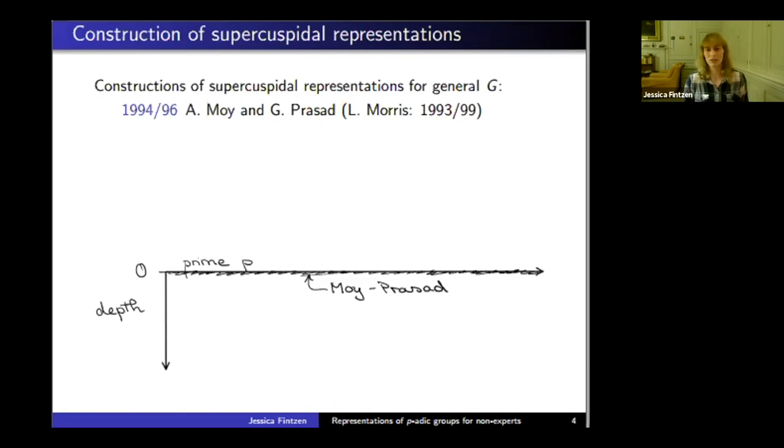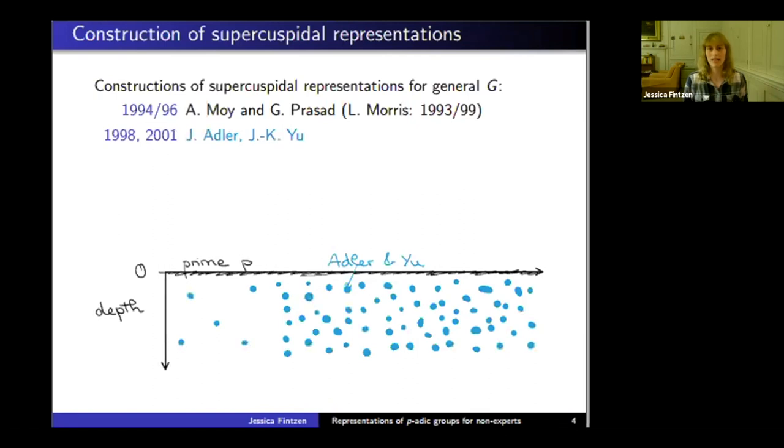Moy, Bruhat, and Morris showed how to construct depth zero representations, relating them to representations of finite groups of Lie type. Then the question was how to find representations of higher depth. This started with work of Adler in 1998 and was generalized vastly by J-K Yu.